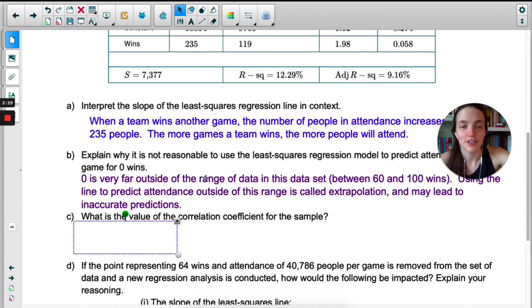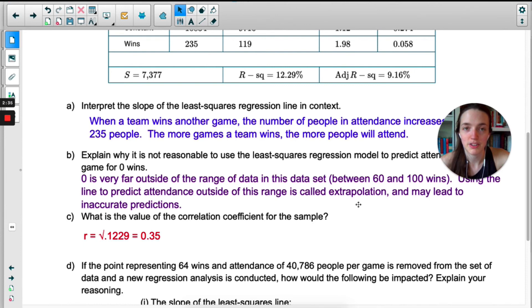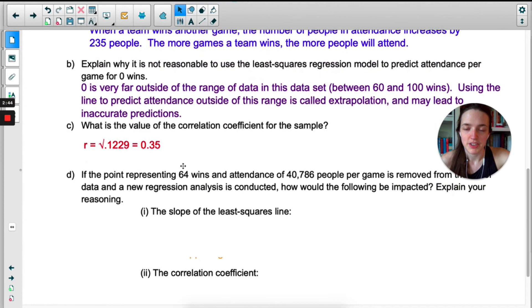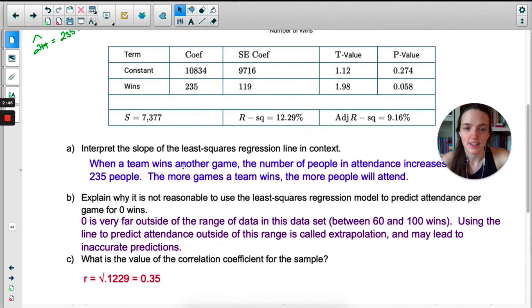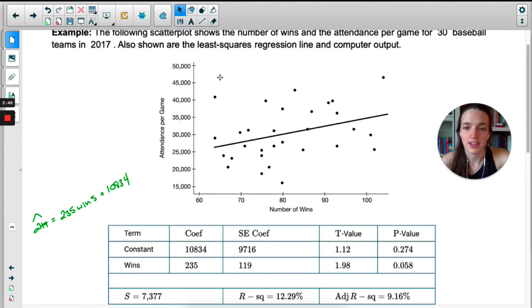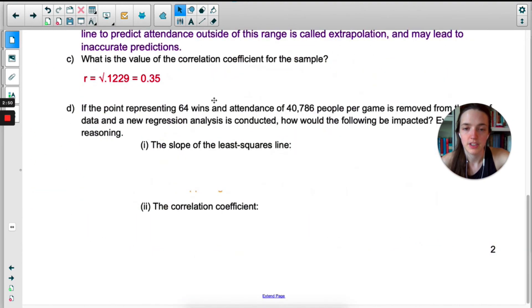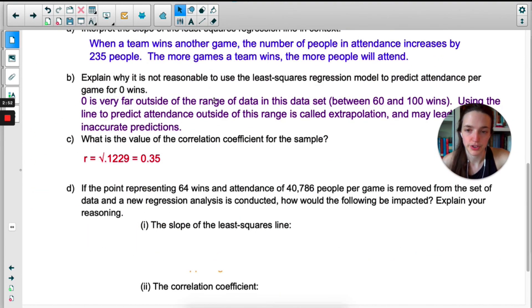Okay, the correlation coefficient is r. So to find r, we just square root r squared. Notice they did not ask us to interpret, so that's all you have to do. Don't have to write anything else. If the point representing 64 wins and attendance of 40,000, so that would be this data point right here, if that point was removed, how would the following be impacted?